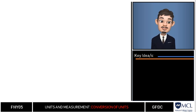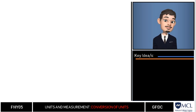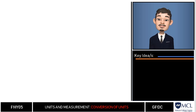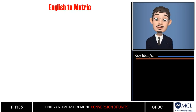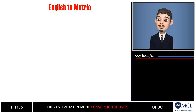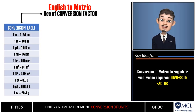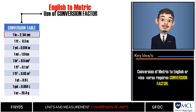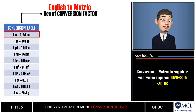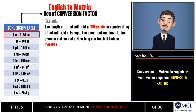Converting within the metric system is relatively easy — just memorize the arrangement of prefixes and count the jumps carefully. Metric to English system, however, is a different story. In general, a conversion factor is used, which relates one unit to another. For instance, one inch is equivalent to 2.54 centimeters.